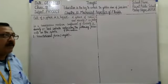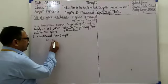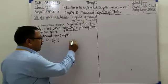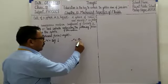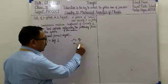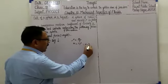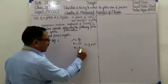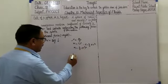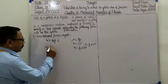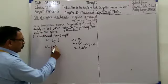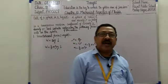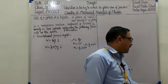Gravitational force जिसे weight कहते हैं वो downward direction में है। W = mg। Mass calculate करने के लिए: rho = mass/volume, so mass = volume × density। Sphere का volume = 4/3 × π × r³। So mass of sphere m = 4/3 × π × r³ × rho। Therefore gravitational force W = 4/3 × π × r³ × rho × g, direction downward।